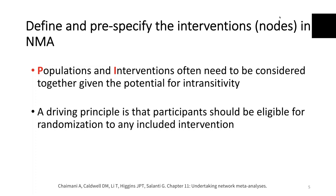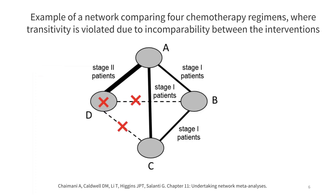For a network meta-analysis, you have to consider populations and interventions jointly given the potential for intransitivity. Transitivity is the assumption underneath a network meta-analysis. A driving principle is that participants should be eligible for randomization to any included intervention — so can you imagine a big trial where you can randomize participants to any of the interventions that you're including in your network meta-analysis? Here is an example where there are four different chemotherapy regimens for a particular type of cancer, and for regimens B and C, they are indicated exclusively for patients with stage 1 disease.